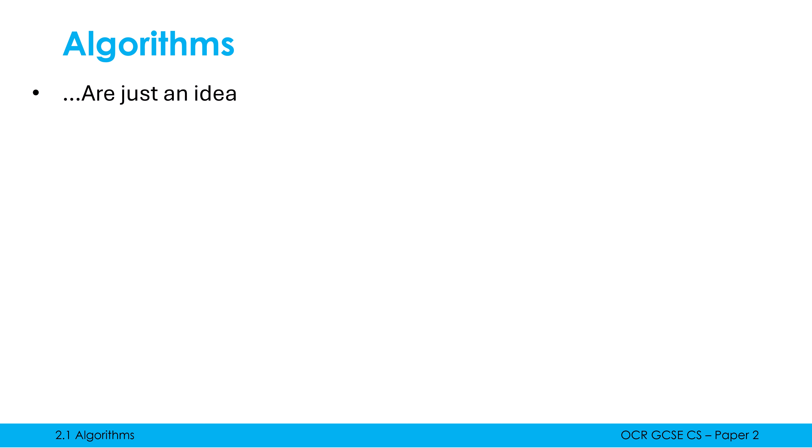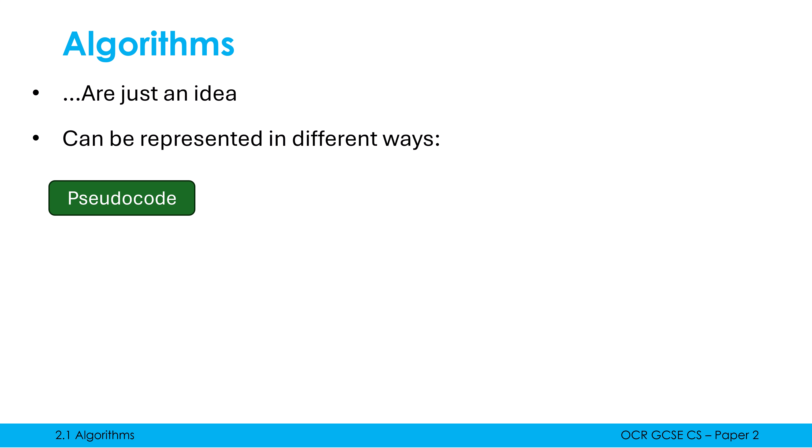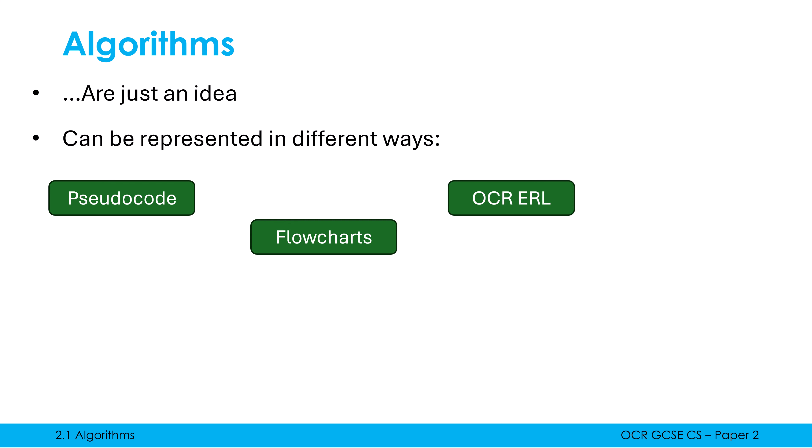Because an algorithm is just an idea, there are loads of ways to represent algorithms. One of them is just me telling you — I could just tell you what to do to make a cupcake, or I could put it in a bullet point list, or I could put it in a table. There are different ways to represent it. The ways most relevant in Paper 2 are pseudocode, flowcharts, OCR exam reference language, and program code. We'll look at each of these representations in turn.